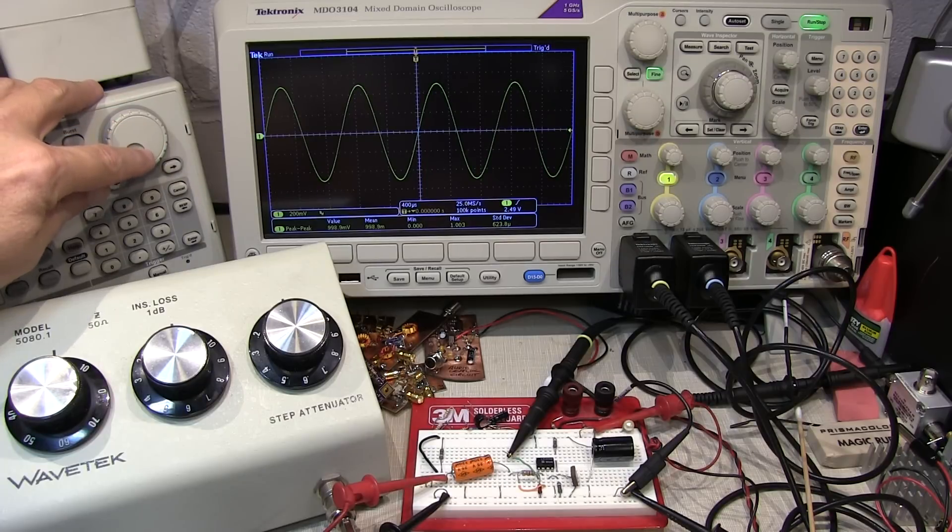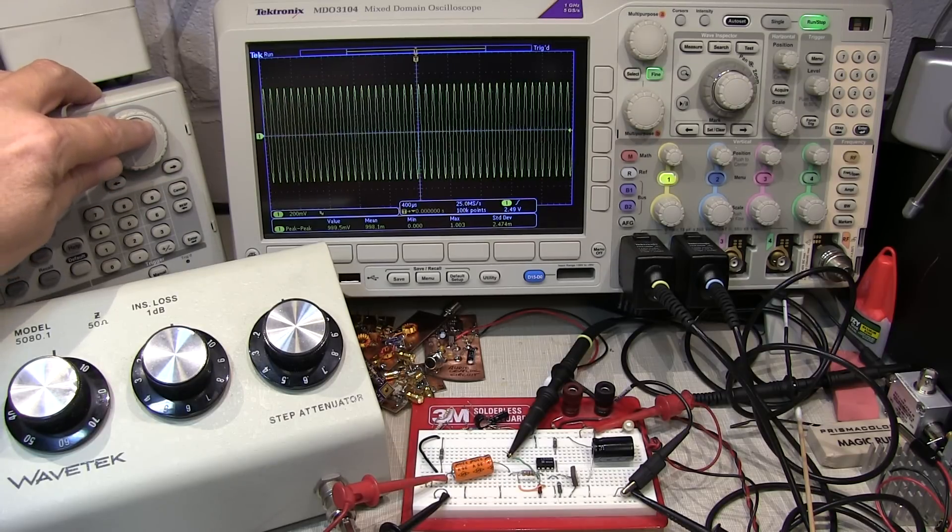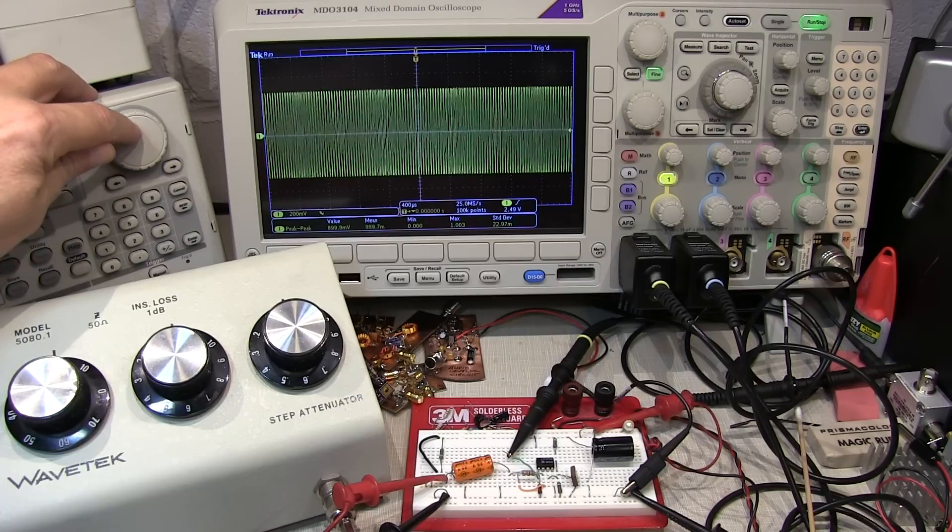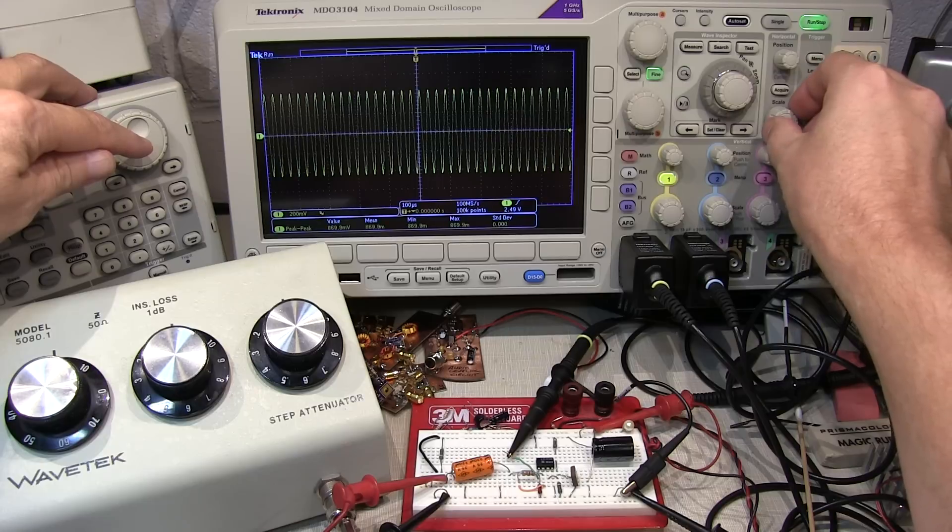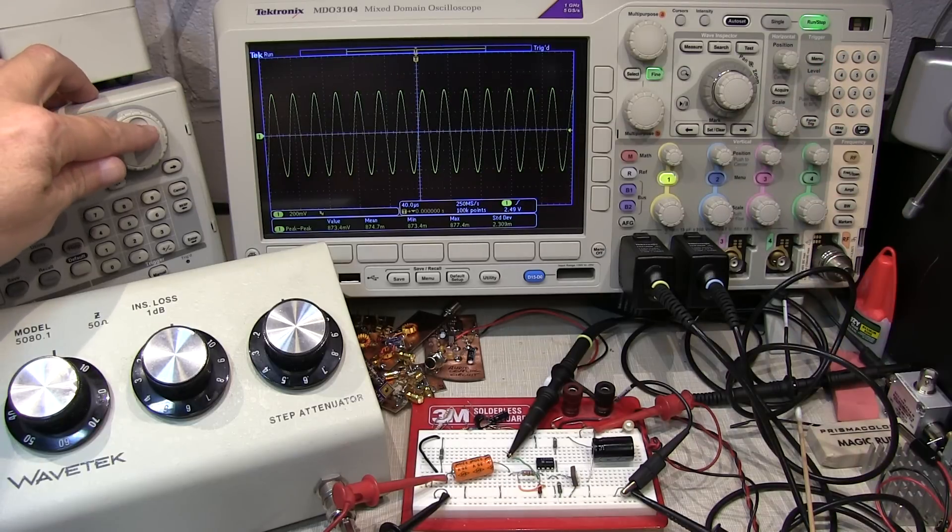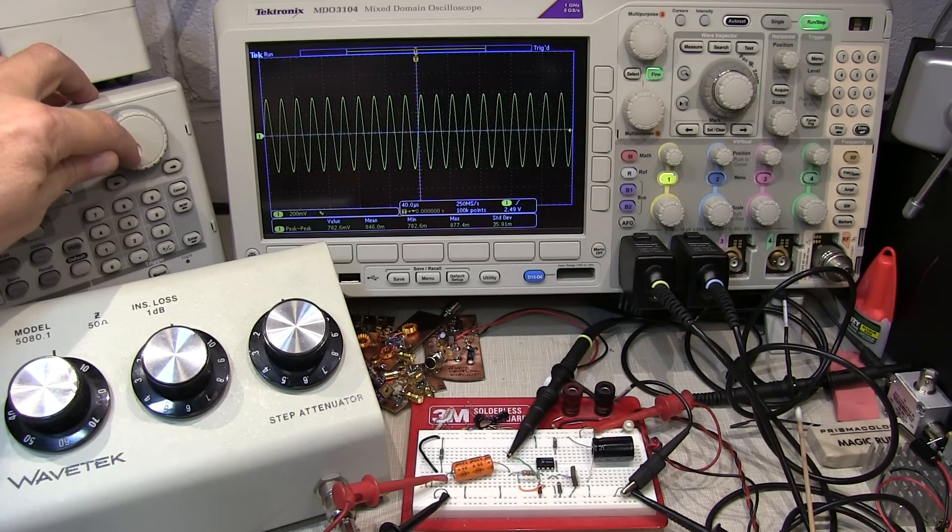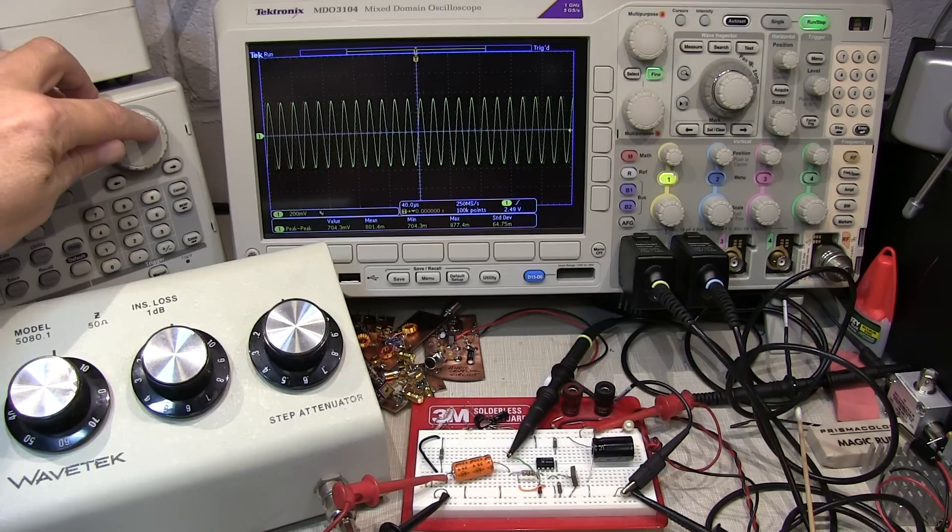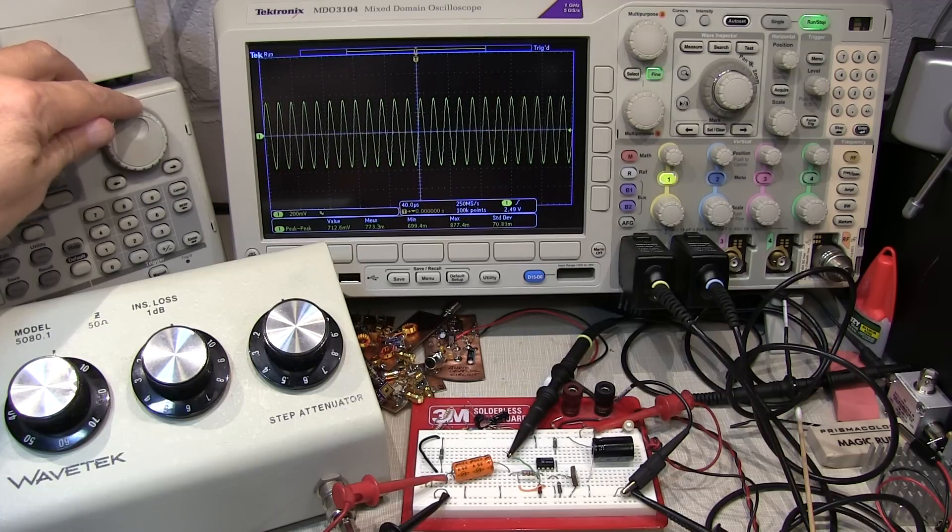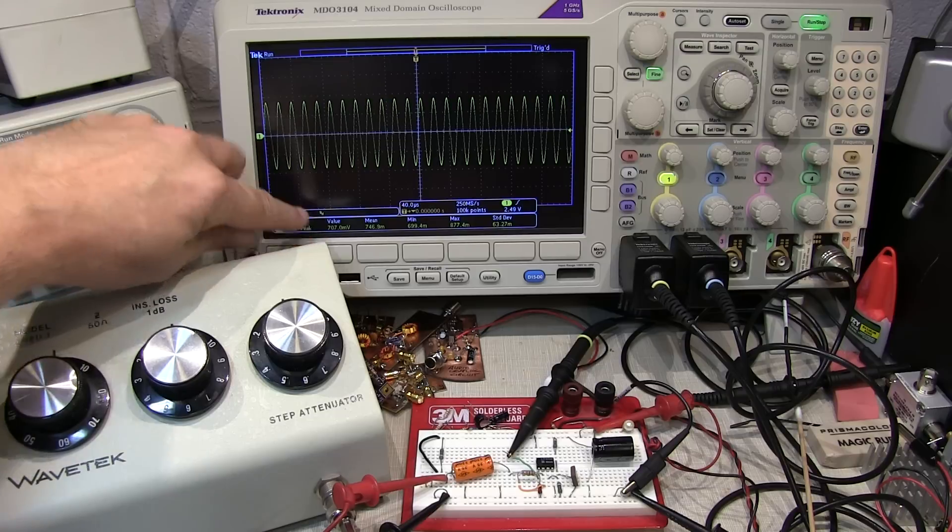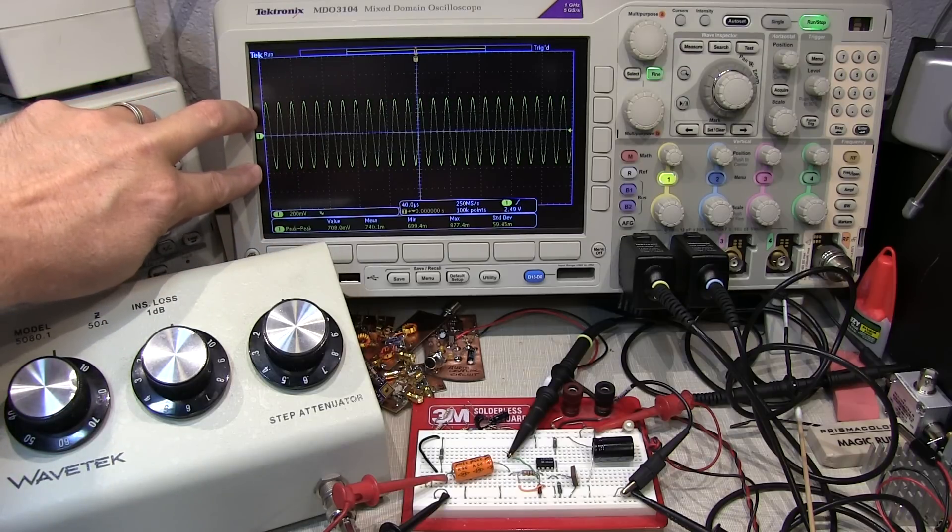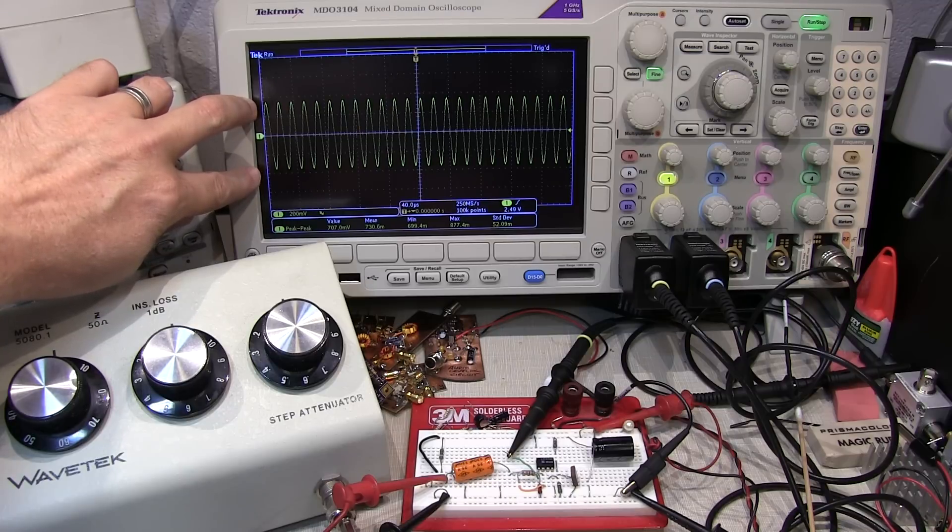To find the 3 dB bandwidth, we just increase the frequency of the signal generator until the output amplitude falls to 707 millivolts peak to peak. So we'll reach over here and start adjusting the frequency up on the signal generator. As we move up here we can see the amplitude starting to fall. I'm going to increase the sweep speed of the scope here a little bit. Keep increasing that waveform frequency. Now we're starting to get down, right about here we're at that 707 millivolts peak to peak.